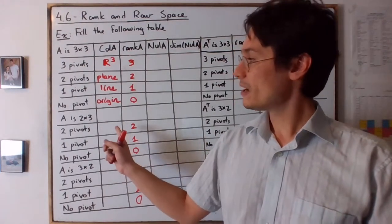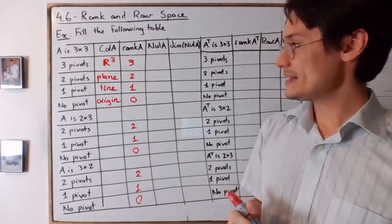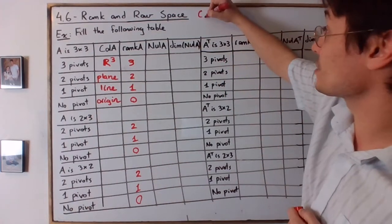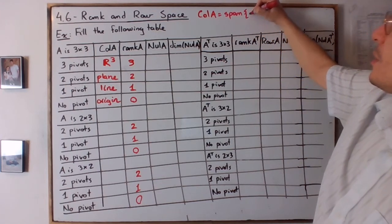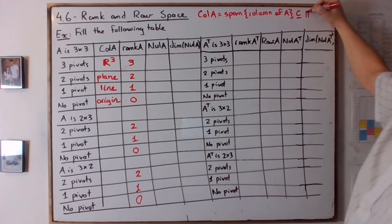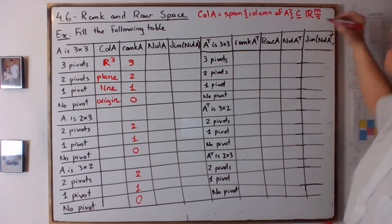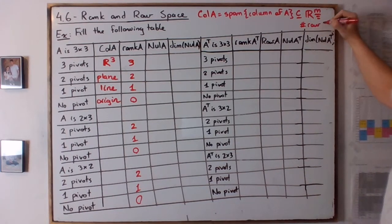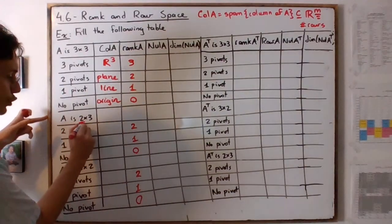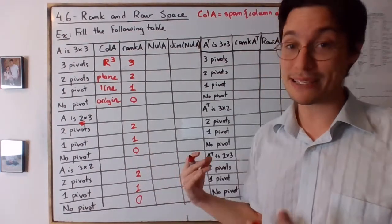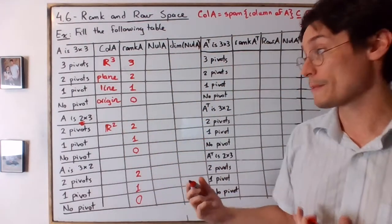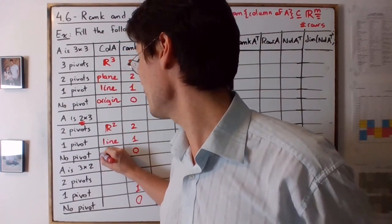It gets slightly more complicated when A is a 2x3 matrix, because you have to remember that Col(A) is the span of the columns of A, and it is a subspace of R^m, where m is the number of rows. So if you have two pivots — the maximum you can get — you get R², not a plane in R³. With one pivot you get a line, and no pivot gives the origin.